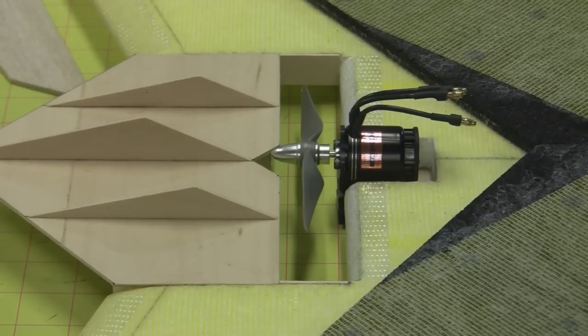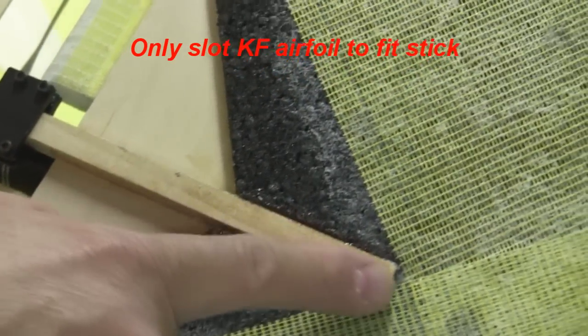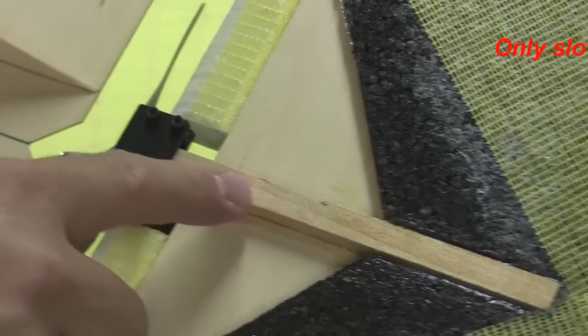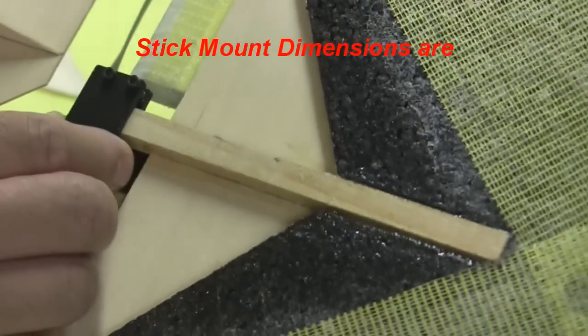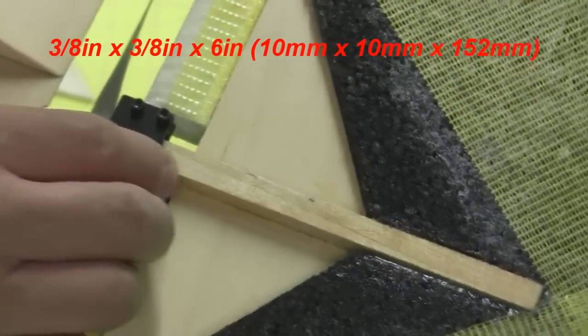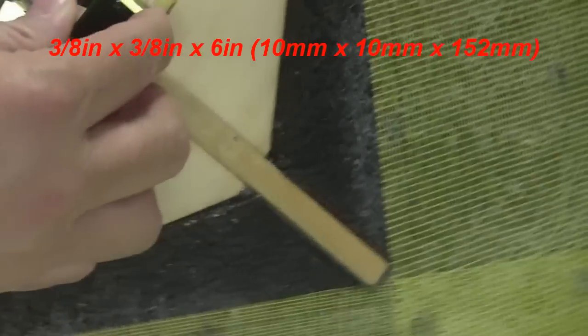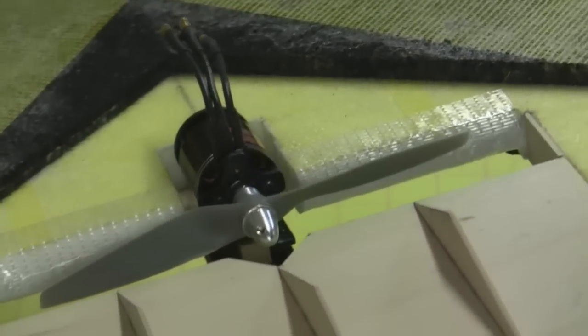I've already got the stick mount glued onto the bottom of the plane. Basically all I did was slotted it right along where the center line is, the width of the stick mount, and epoxied it in there. This piece for this particular mount is about 6 inches long. If you're using a different type of stick mount, you may need to adjust the length of the stick. And depending on what type of motor you're using, whether it's mounted forward or backward.